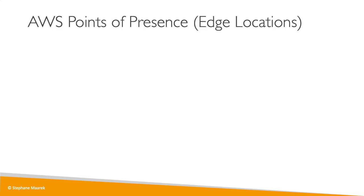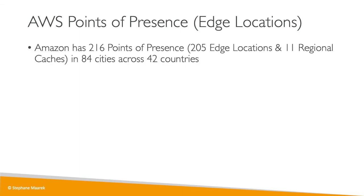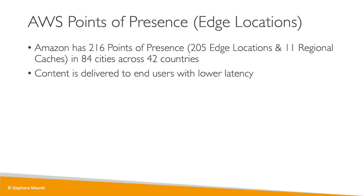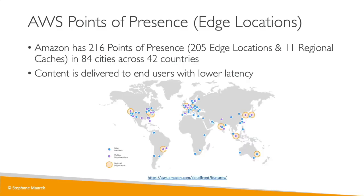The next thing to know about AWS global infrastructure is points of presence, also called edge locations. We'll cover them in detail in the global section of this course, but AWS has more than 200 points of presence in 84 cities across 42 countries. This is very helpful for delivering content to end users with the lowest latency possible.